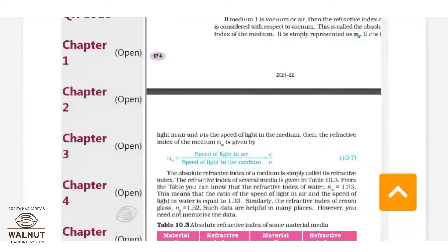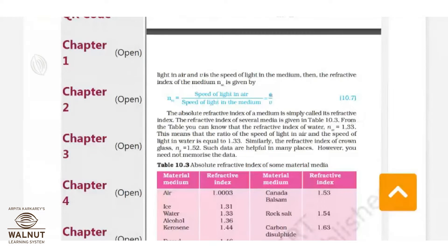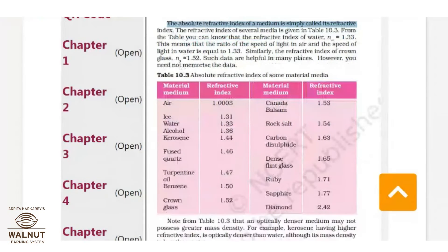Let's move ahead. To calculate the refractive index of a medium, you take the speed of light in air divided by the speed of light in any other medium. We let c be the speed of light in air and v be the speed of light in any medium. The formula is expressed as n_m = c / v. This is called the absolute refractive index of a medium, simply called its refractive index.